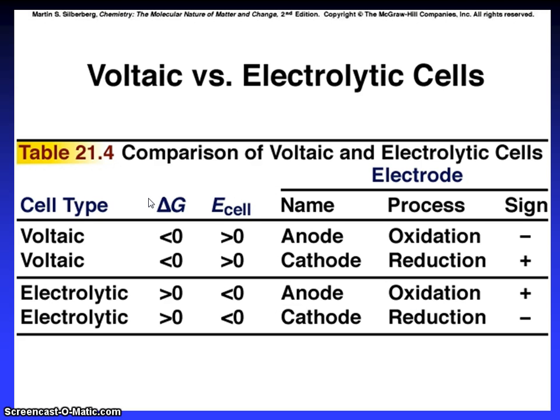Voltaic versus electrolytic cell. Cell type, del G, E cell, name, process, sign. Voltaic: less than 0, greater than 0, anode, process oxidation, sign negative. Voltaic: less than 0, greater than 0, cathode, reduction plus. Electrolytic: greater than 0, less than 0, anode, oxidation positive. Electrolytic: greater than 0, less than 0, cathode, reduction negative.